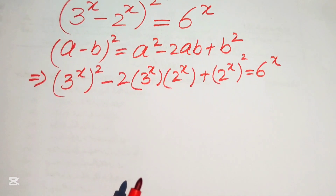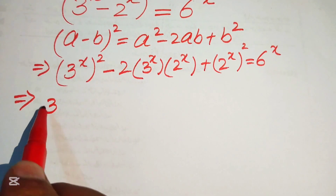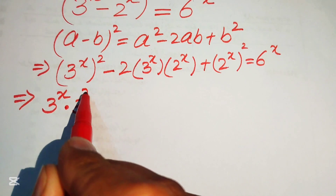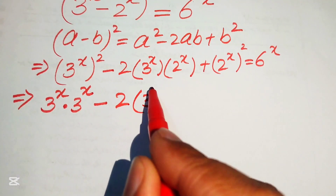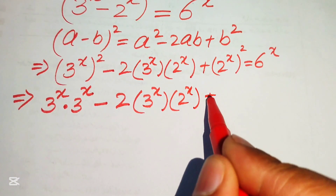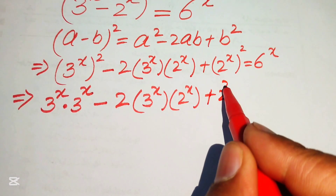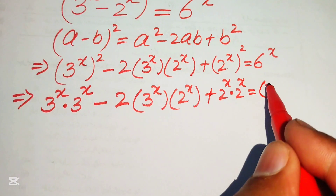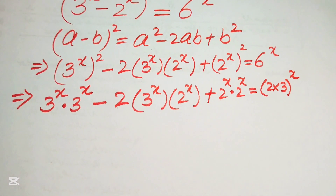For further simplification, we write (3^x)² as 3^x · 3^x, the middle term as 2·(3^x)·(2^x), and (2^x)² as 2^x · 2^x. We also write 6^x as (2·3)^x.